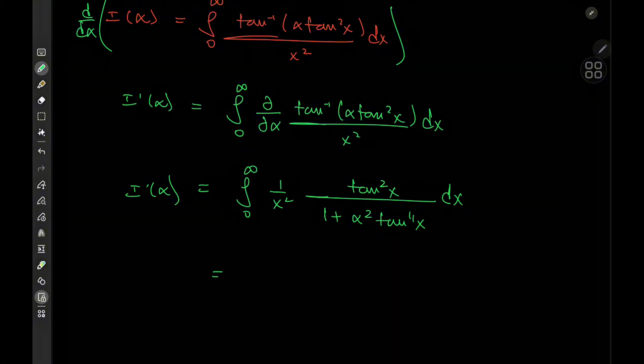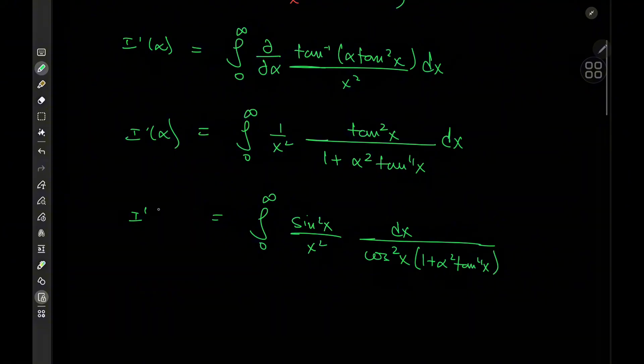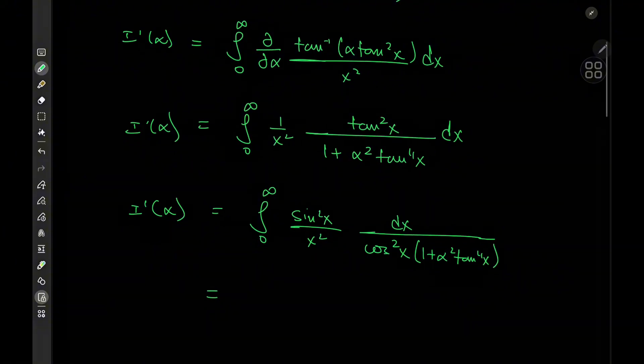And now we do have a tangent squared up top. So we might as well expand that as sine squared over cosine squared so that we have sine squared x over x squared. And I think you guys have figured out where this is going. Over cosine squared of x times 1 plus alpha squared times tangent to the fourth power of x. And of course, now we have an opportunity to apply Lobachevsky's integral formula, which I have made a couple videos about. I don't think I've formally proved this variation, the one with the sine squared x over x squared term, but I should probably make a video on that. I will link a related video in the description box.